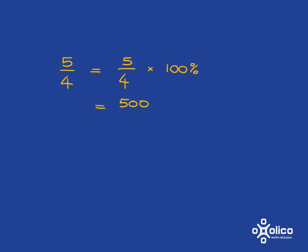500 over 4%, and if we do 500 divided by 4, 4 into 5 goes once, remainder 1, 4 into 10 goes twice, remainder 2, and 4 into 20 goes 5 times. So 5 over 4 is 125%, and the fact that it's 125% should make sense, right? Because 5 over 4 is bigger than 1.